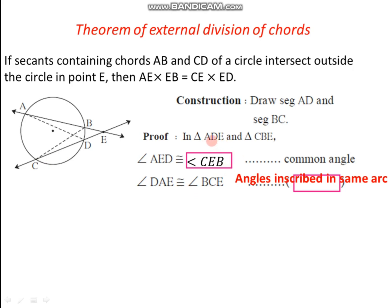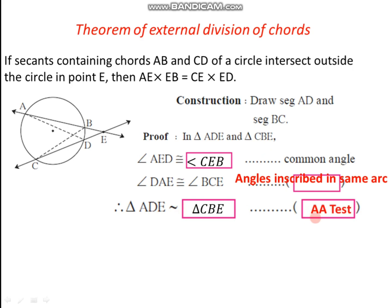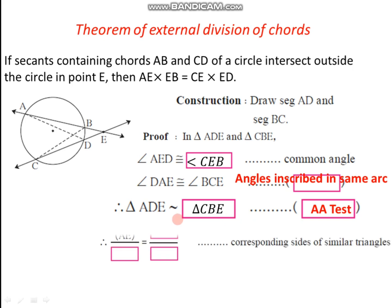Therefore, triangle ADE is similar to triangle CBE by the AA test. Since these two triangles are similar, the corresponding sides must be in proportion. So we write AE divided by CE is equal to ED divided by EB, because corresponding sides of similar triangles are in proportion.